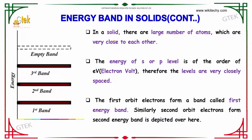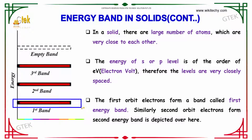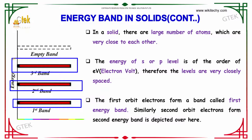In a solid, there are a large number of atoms which are very close to each other. The energy of the S and P levels is of the order of electron volts; therefore, the levels are very closely spaced. The first orbit electrons form a band called the first energy band. Similarly, second orbit electrons form the second energy band, and the third orbit electrons form the third energy band.